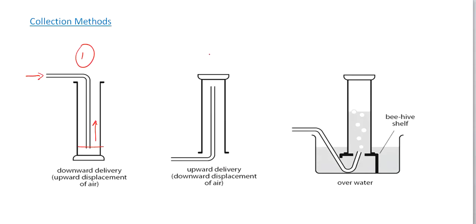The second collection method is called upward delivery, or downward displacement of air. If we have a gas entering and the gas is less dense than air, the gas is going to collect at the top and air is going to be displaced downwards.